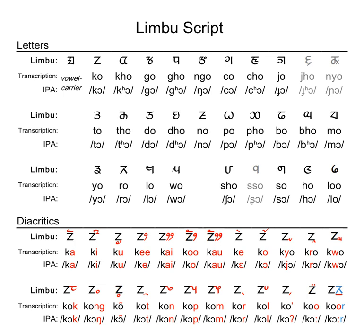Syllable-initial vowels use the vowel carrier with the appropriate dependent vowel sign. Used by itself, it represents the syllable-initial vowel. Initial consonant clusters are written with small marks following the main consonant. Final consonants after short vowels are written with another set of marks, except for some final consonants occurring only in loanwords, which follow the marks for consonant clusters, if any.